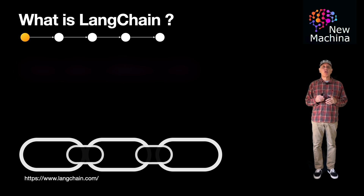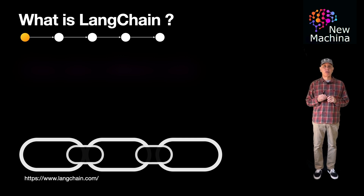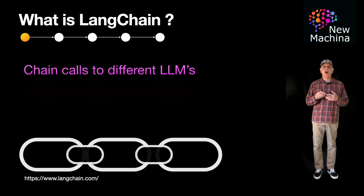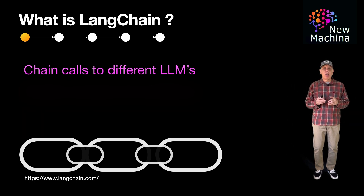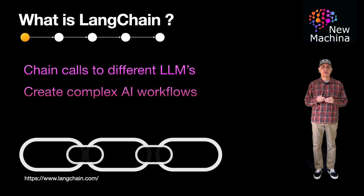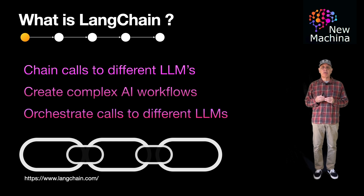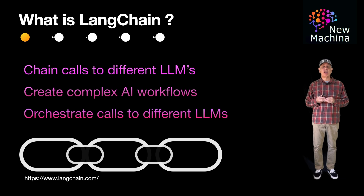LangChain is an open source framework for building applications based on large language models. LangChain, as the name implies, enables you to chain calls to one or more different LLMs, allowing you to create complex AI workloads. Using LangChain, developers can orchestrate calls to LLMs to implement advanced AI tasks such as text generation, summarization, and translation.